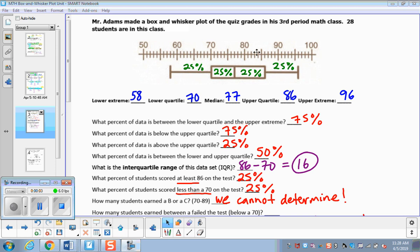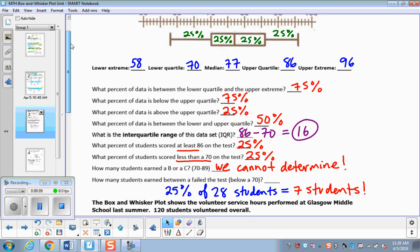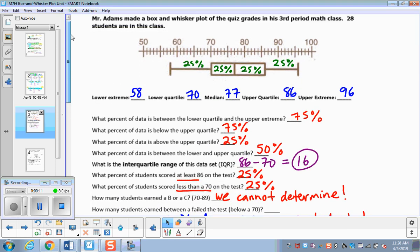So this is the answer to the first example about Mr. Adams, and then we're going to go through the volunteer service hours example. All right, Mr. Adams made a box and whisker plot of the quiz grades in his third period math class.